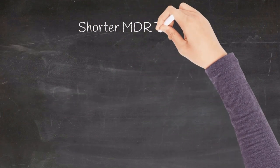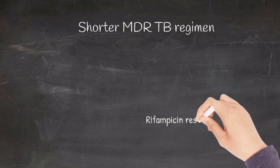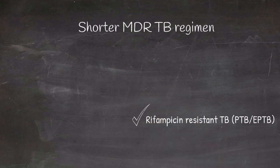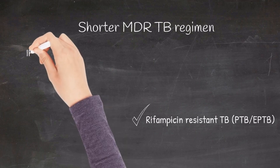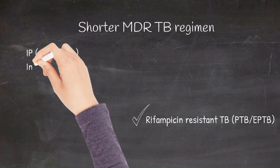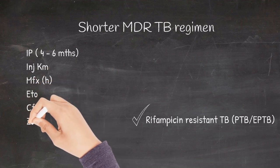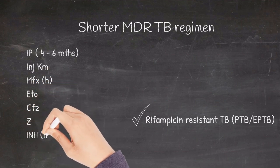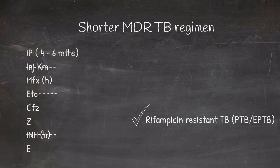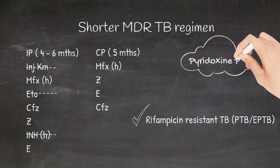The shorter MDR-TB regimen. This regimen is selected for patients who have rifampicin resistance without additional resistance to second line injectables or fluoroquinolones. In the intensive phase which lasts for four to six months, you give injection kanamycin, high dose of moxifloxacin, ethionamide, clofazimine, pyrazinamide, high dose of INH and ethambutol. In the continuation phase which lasts for five months, kanamycin, INH, and ethionamide is removed and all other drugs are continued. Pyridoxine for toxin prophylaxis is given.